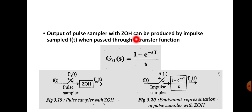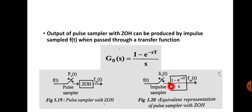The output of the pulse sampler with zero order hold can be produced by impulse sampled f(t) when passed through a transfer function G₀(s) = (1 - e^(-sT))/s. In the case of a pulse sampler with ZOH, the equivalent representation using the impulse sampler uses this transfer function. You should remember this transfer function (1 - e^(-sT))/s.